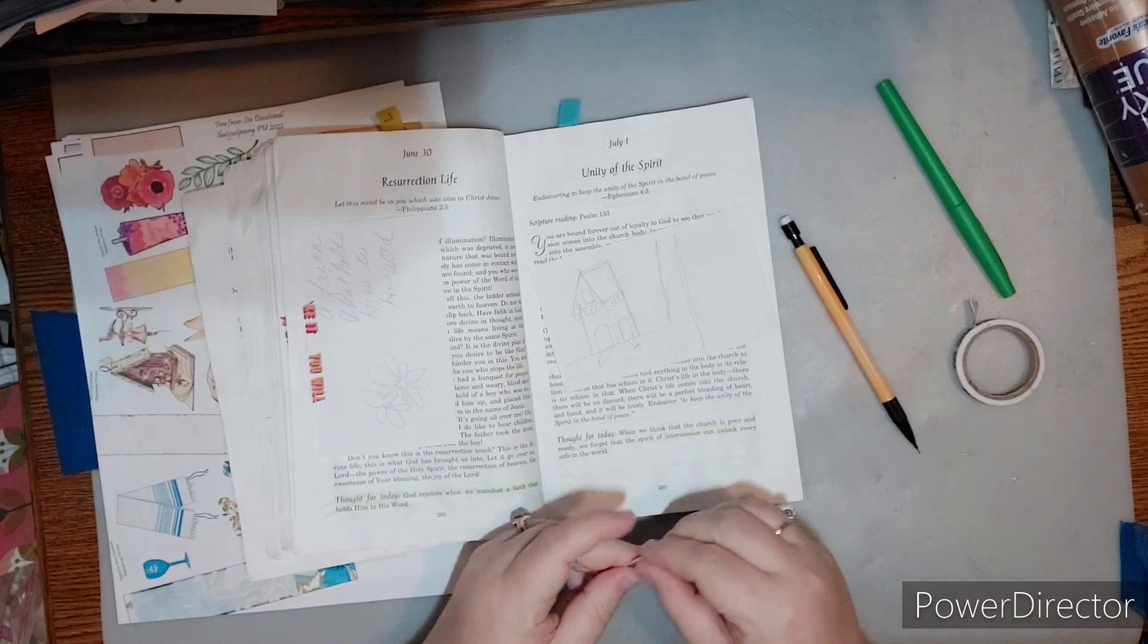To keep the unity of the spirit in the bond of peace. I'm thinking about bond of peace. And I'm thinking about what I could do. When you think of peace, what do you think of? When you think of birds, you could do birds in a nest. Different types of birds.